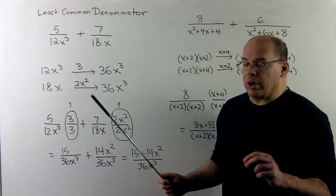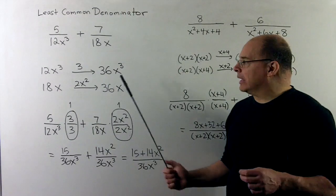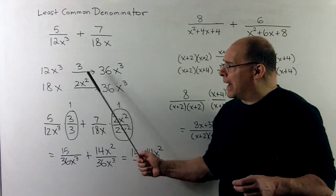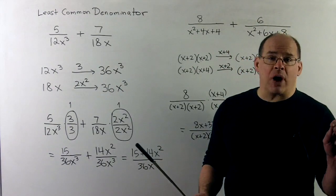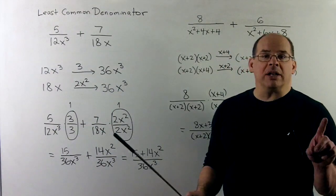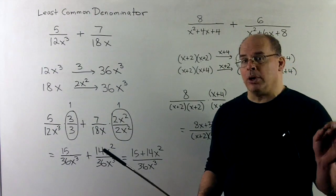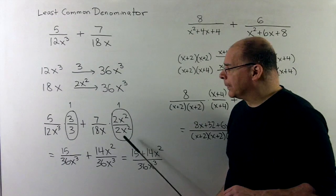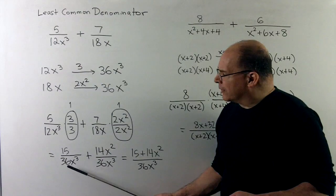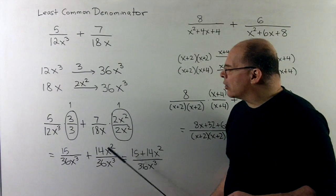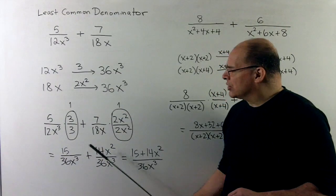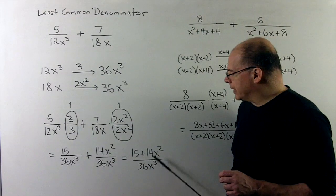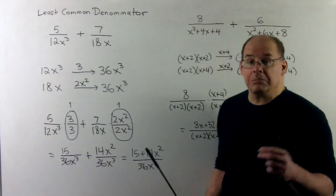After multiplying, we get 15 over 36x³ plus 14x² over 36x³. The denominators match, so we add numerators: 15 plus 14x² over 36x³. This won't simplify any further, so that's our answer.